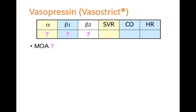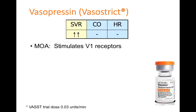Let's start with the first agent: vasopressin. The key questions are: what is the mechanism and what are the net hemodynamic effects? Vasopressin is non-adrenergic — it does not work through alpha or beta receptors. It works by stimulating V1 receptors in the vasculature, causing vasoconstriction. This translates hemodynamically to an increase in systemic vascular resistance or SVR. It doesn't have much effect on cardiac output or heart rate, so it's mostly a pure vasoconstrictor.